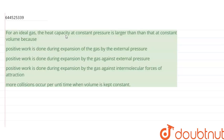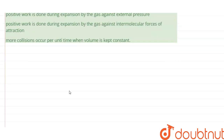Hello everyone. The question is: for an ideal gas, the heat capacity at constant pressure, which is Cp, is larger than at constant volume, which is Cv. So they are saying the value of Cp is greater than Cv — molar specific heat at constant pressure is larger than molar specific heat at constant volume, and we will explain the reason.